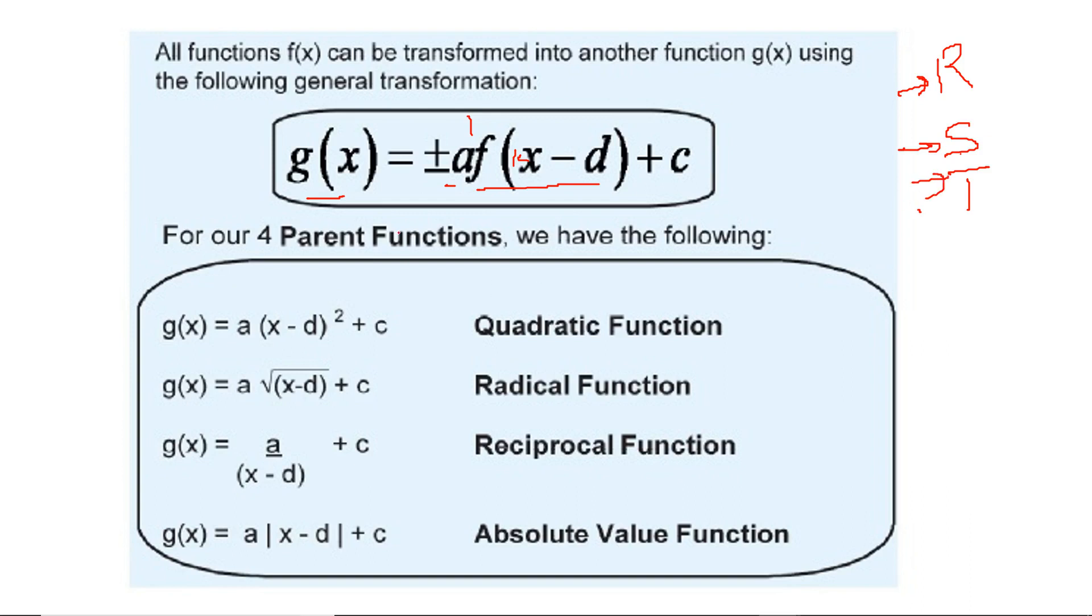We have four parent functions. Quadratic function, we put (x-d)² in this place. Radical, we take the root of (x-d). Reciprocal, we put it in the denominator. Absolute value, we just put a modulus sign.